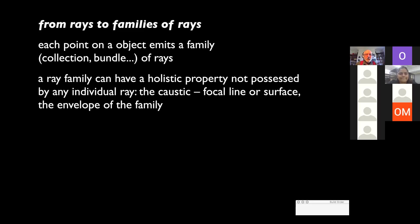Now, let me go a little bit further to explain mirages. Each point on an object that you're looking at emits a family of rays, a collection, a bundle of rays. And a ray family has a property, a holistic property, that no individual ray possesses. It's a caustic, a focal line or surface. It's the envelope of the family.